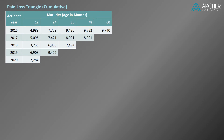In order to analyze loss development, we need to start with a loss triangle. In this example, we have a paid loss triangle on an accident year basis with annual evaluations from age 12 months to age 60 months for accident years from 2016 through 2020. If you're not familiar with a loss triangle, I recommend you start with the loss triangle introduction video, where we build this exact paid loss triangle from scratch.